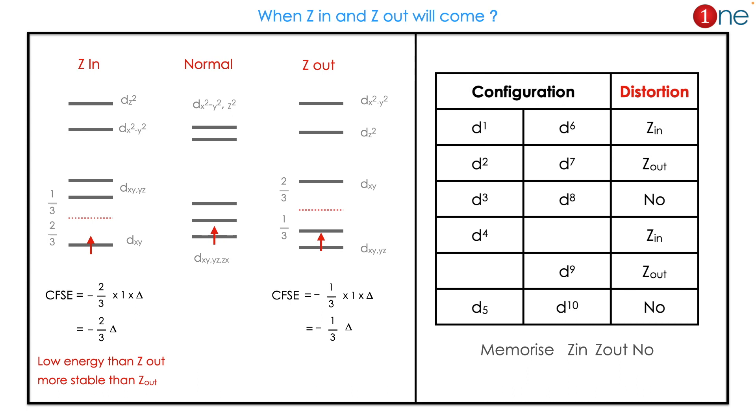Here is the d1 electron situation: Z in will be more stable because it has 2/3 Δ value. The same electron in Z out will have higher energy, so Z in is more stable. This is not hard to memorize.